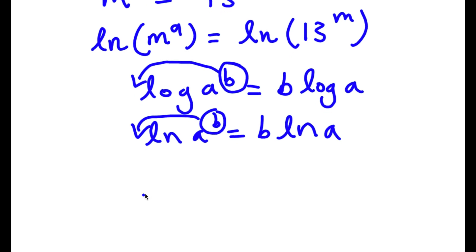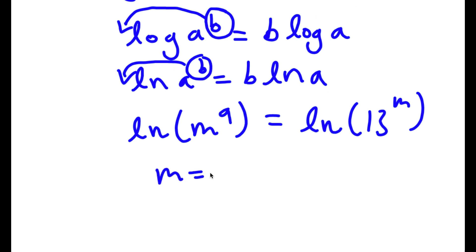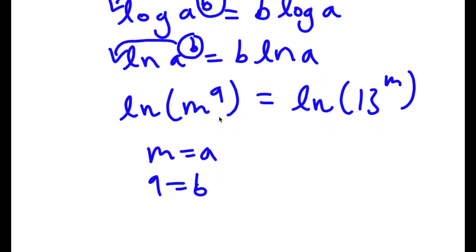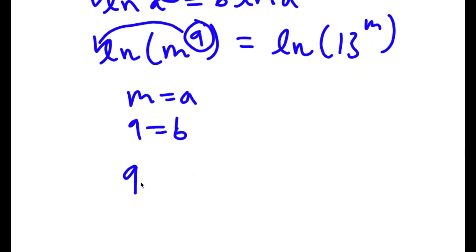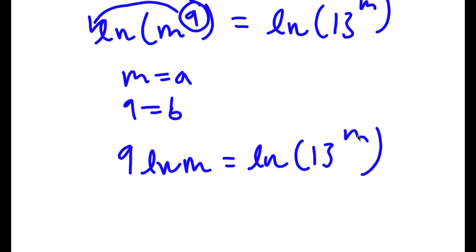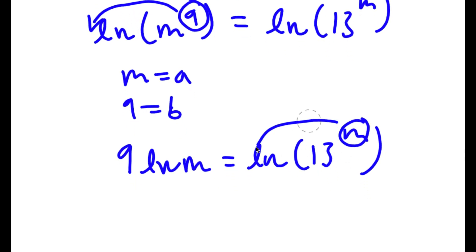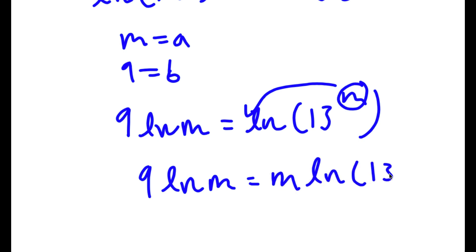So in this case, I have ln of m to the power of 9, equal to ln of 13 to the power of m. I can think of m as a and 9 as b, so I can move this exponent 9 to the front. This gives me 9 times ln m, equal to ln of 13 to the power of m. Then I do the same thing on the right side, moving the exponent m to the front, so now I have 9 times ln m is equal to m times ln 13.